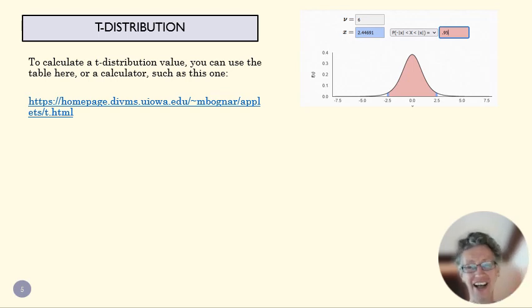If you're confused about how to use one of these calculators, just put in a number that you know. Put in degrees of freedom of 100 and 95%, and you should get a two, because for a large n we're going to have a t-score of two for 95% confidence.